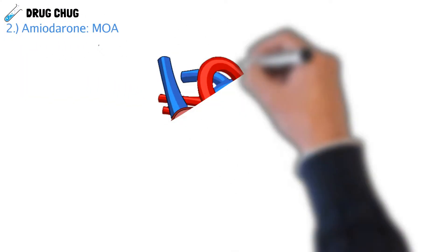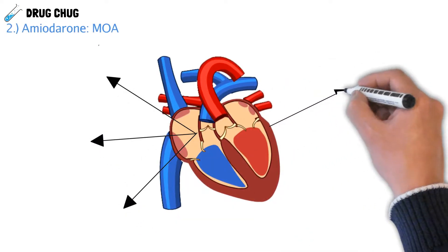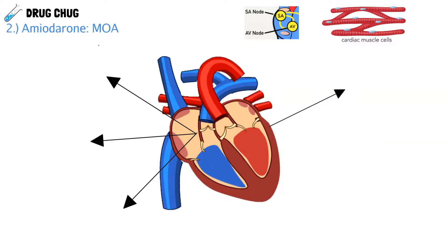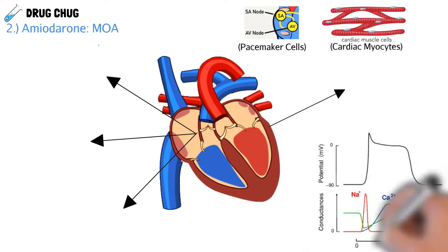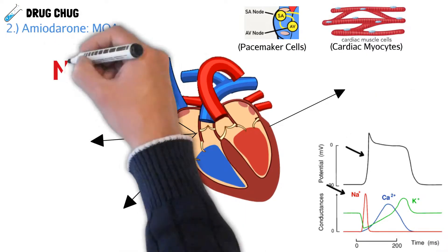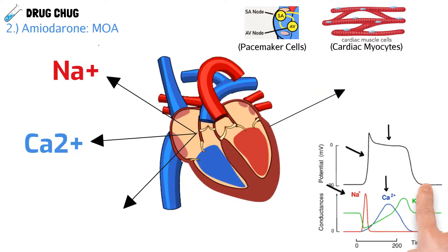Let's go a step further and talk about the mechanism of action. We know it blocks all these channels and receptors, but the heart is very complex — it's the thing that keeps us alive. When you take a look at the heart, you have the myocytes, which are the heart muscles, and they contract in a certain way. You also have your pacemaker cells that actually start the impulse to contract the heart. Here is a picture of the way the muscles contract in the heart. You see this peak where it's red — this is where the sodium channels open up. Then we see calcium being released, and then when it drops off where it's green is where we see the potassium start leaking out.